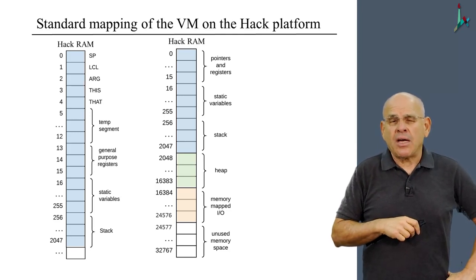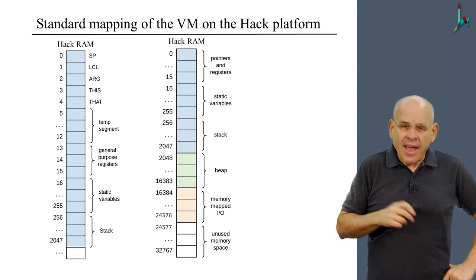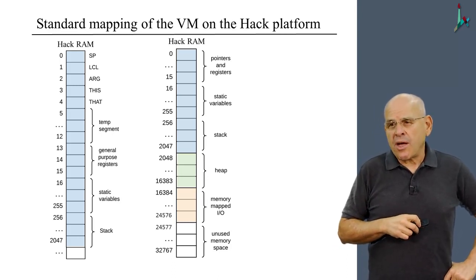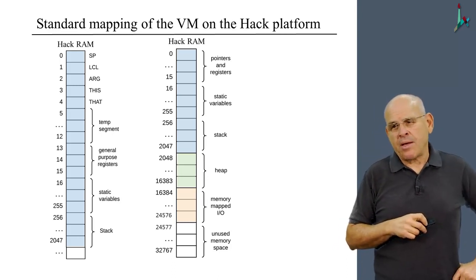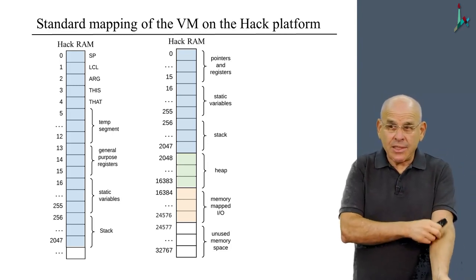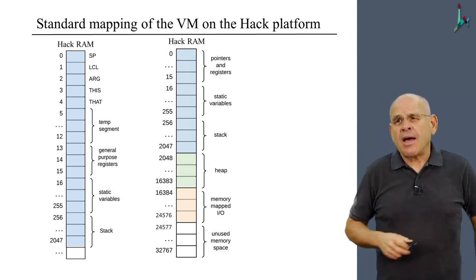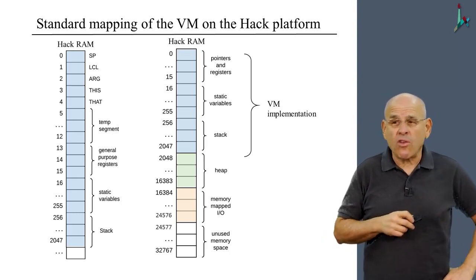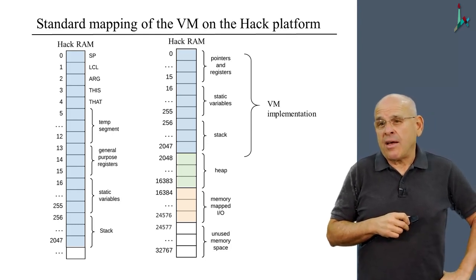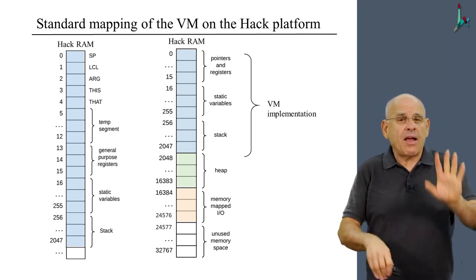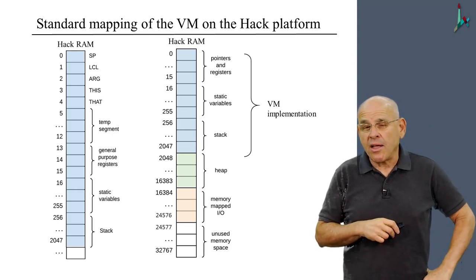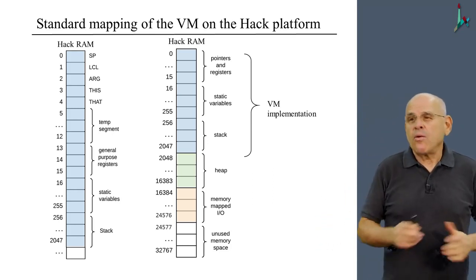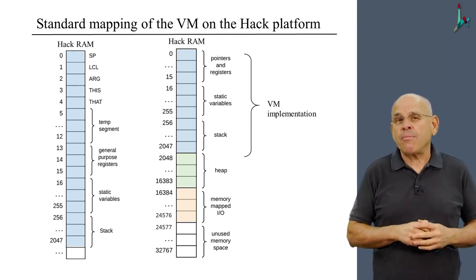The top 2k words are what we've been discussing all the time. That's the blue stuff on the left. Then we have several other areas on the host RAM which we call heap, memory mapped I.O., and some unused space. As far as the VM implementation is concerned, we worry only about the top 2k of the RAM. Everything else is something that is going to be used for other purposes, purposes that are not within the jurisdiction of the VM implementation.